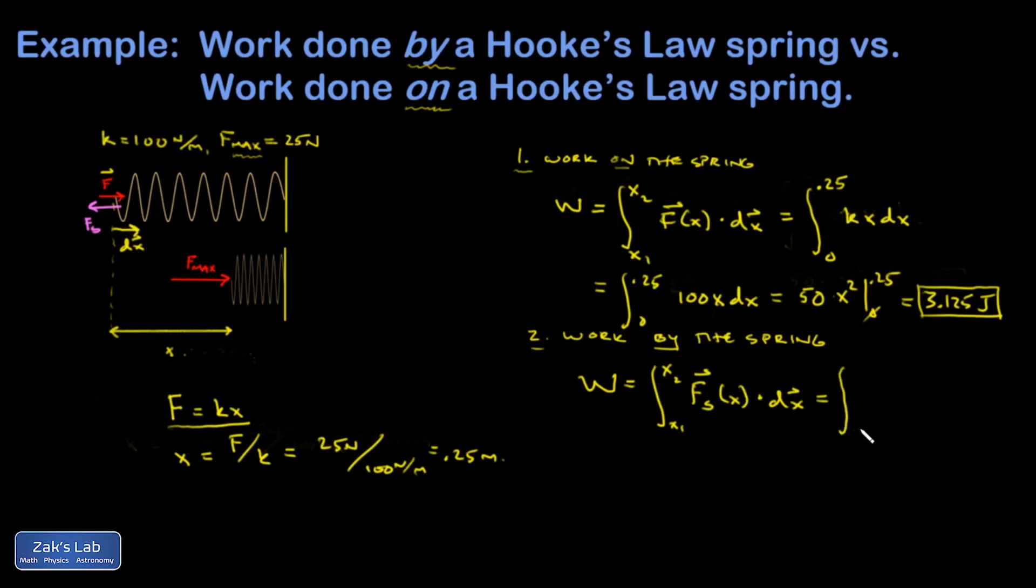So integral from 0 to 0.25 of negative kx dx. There's no reason to do all this calculus again. It's the exact same integral with a minus sign in front, so I get negative 3.125 joules for the work done by the spring.